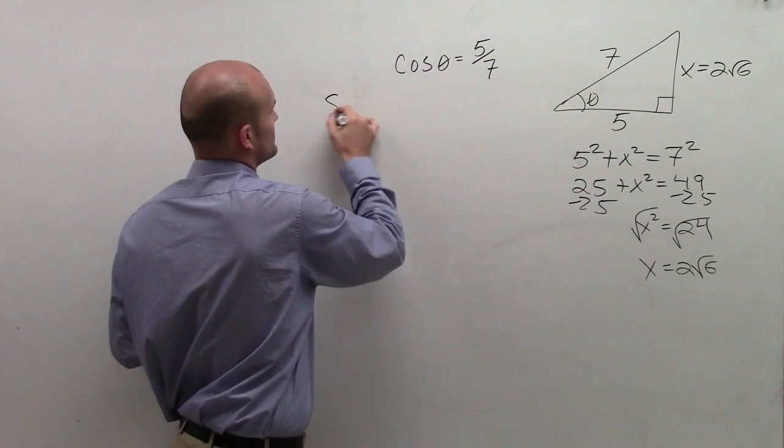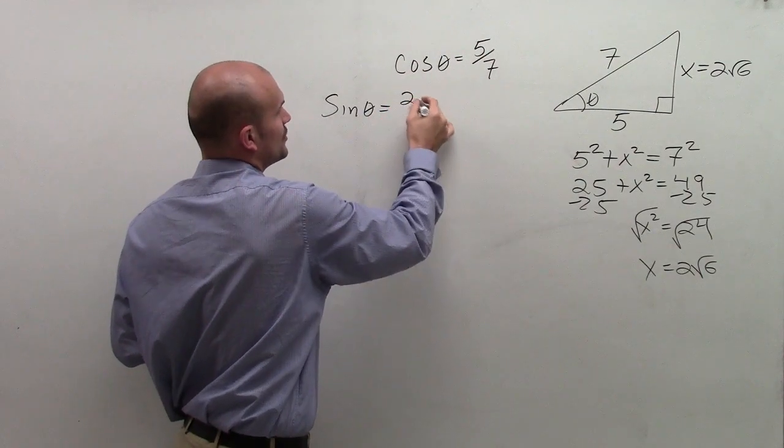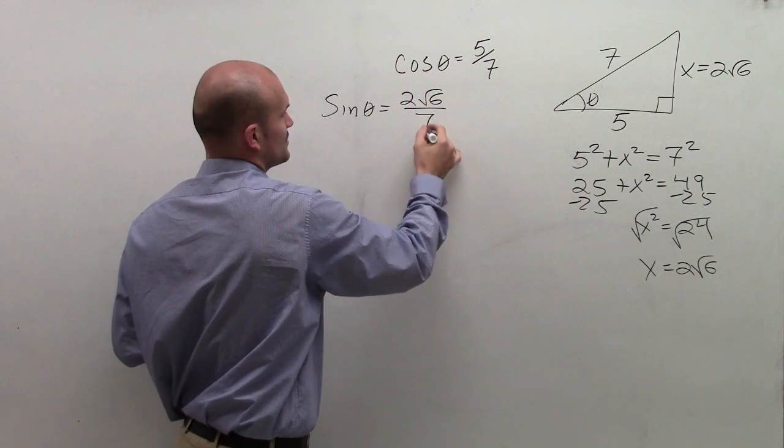So if I know cosine is 5 over 7, that means sine of theta is going to be opposite over hypotenuse, which will be 2 square root of 6 over 7.